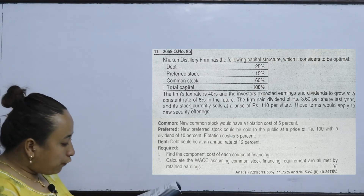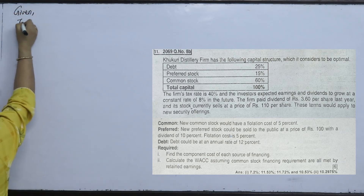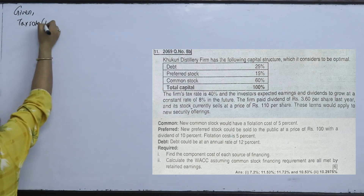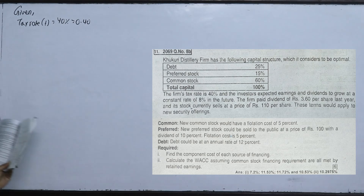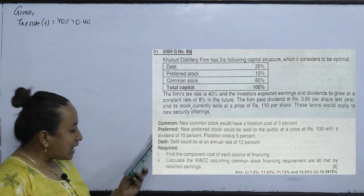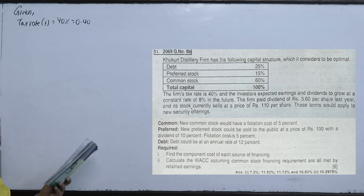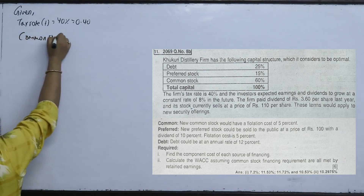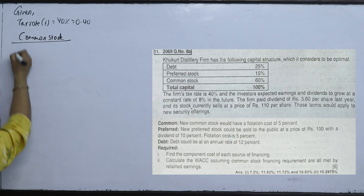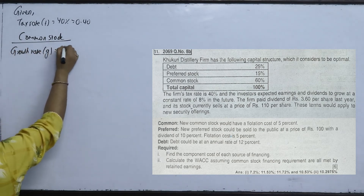Now the question gives us the firm's tax rate. The firm's earnings and dividends are expected to grow at a constant rate of 8% in the future. The growth rate G is 8%.